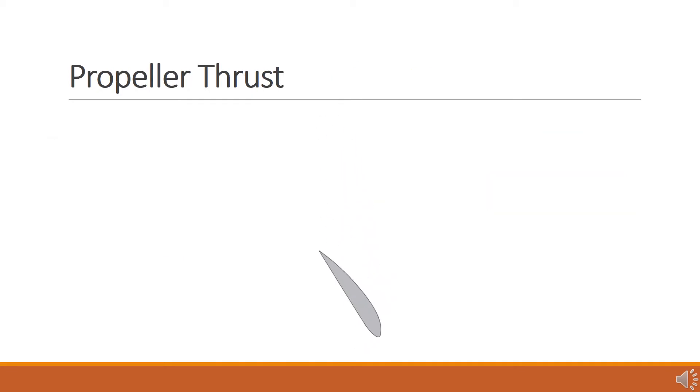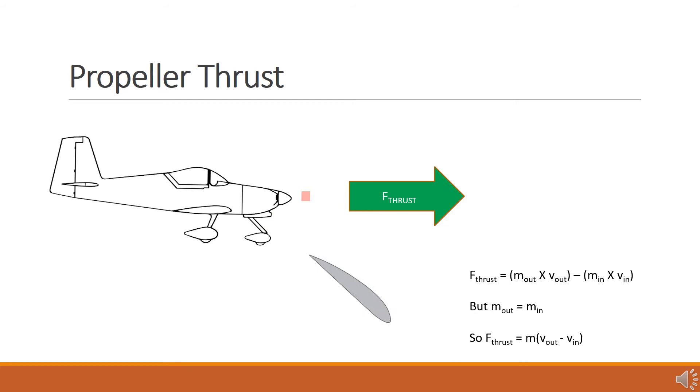To summarize this concept, a propeller produces forward motion in an aircraft by doing work on a mass of air at a specific velocity. While the mass of air being pushed by the propeller does not change, it pushes toward the rear of the aircraft at an increased velocity. This increase in velocity means that the air has been accelerated. The product of the mass of the air and the acceleration is a force pushing the air backwards. The force equal and opposite to this force is the thrust force and results in the forward motion of the aircraft.